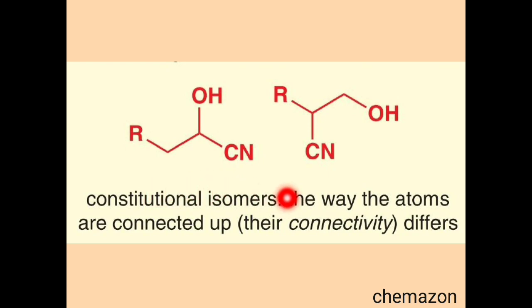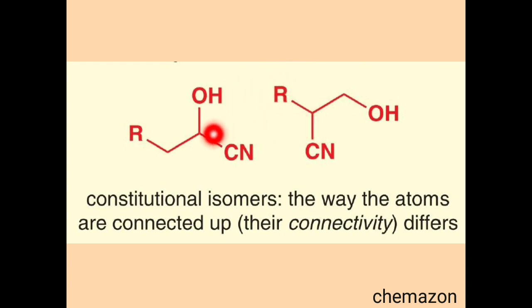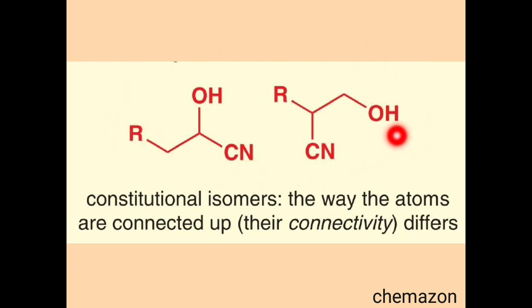So what are constitutional isomers? The way the atoms are connected differs. In this another example, you can see that in one molecule the cyano group is attached at the second position, close to the carbon next to the alkyl or aryl group, while in the other the cyano group is at the carbon connected to the hydroxyl group. So the bond connectivity of the atoms is different, hence they are called constitutional isomers.